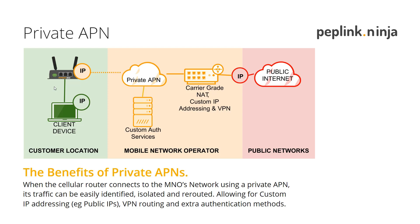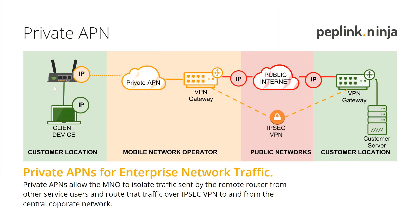In the mobile network operator world, those useful things include custom IP addressing. If I had a thousand devices all on my own private APN, I could give an IP range to all of those devices — perhaps even statically assign them on a private IP range — so all my devices could contact each other. Or I might want a public IP address assigned by the mobile network operator. The MNO might also offer different authentication services, such as RADIUS authentication against an enterprise network, Active Directory, or similar. The key thing is a private APN lets the mobile network operator know whose device it is and whose traffic is being received over that APN.